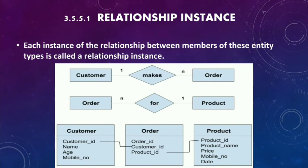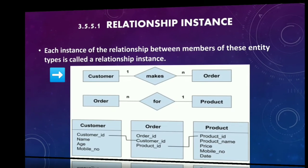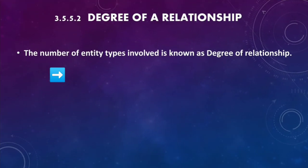This is how a relationship is created. In the example, 'Customer makes Order' — one customer can make multiple orders, which is a one-to-many relationship. Here Customer is the entity, Order is the entity, 'makes' is the relationship instance, and the rhombus shape represents the relationship.